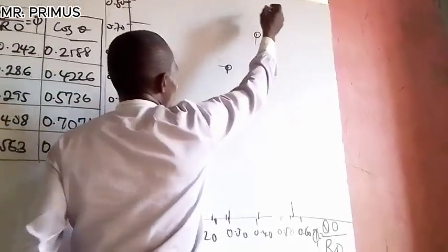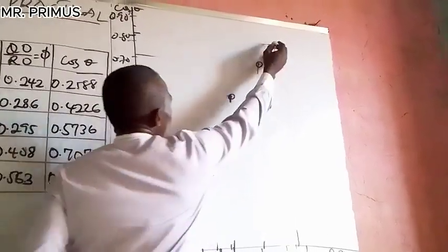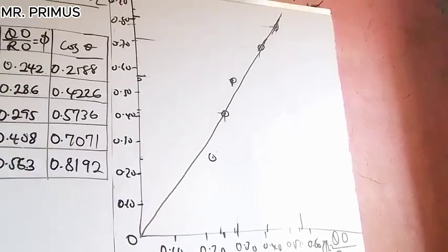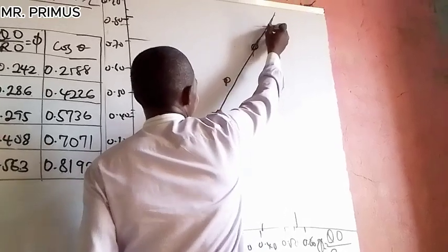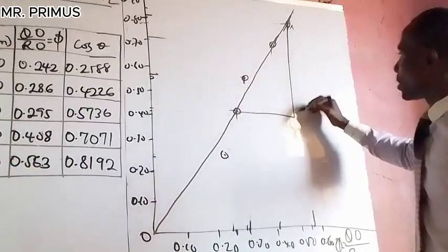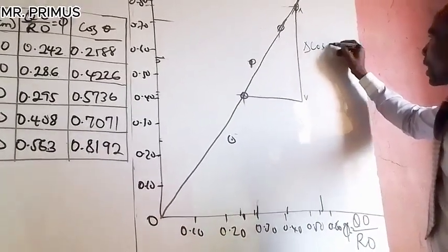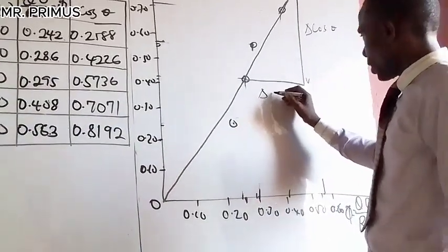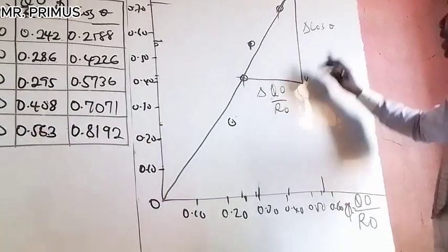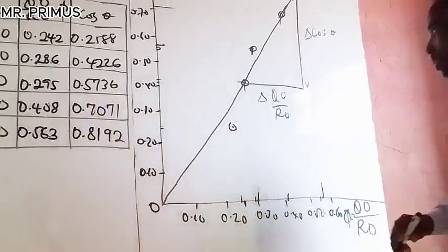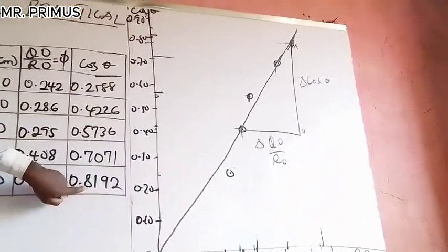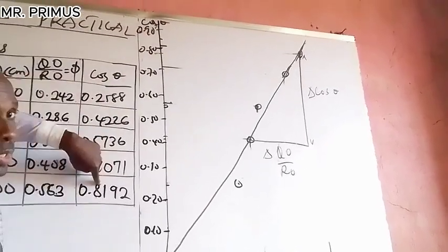Two points are slightly off, but we managed to get a best-fit line. Now get your slope — use a large triangle on the line. This side here is the change in cos(theta), and the base is the change in QO/RO. The upper value we are reading off is approximately 0.82.